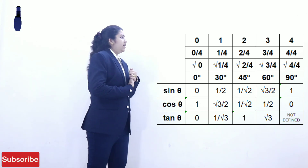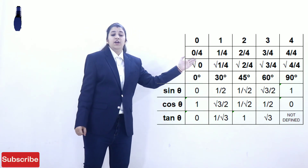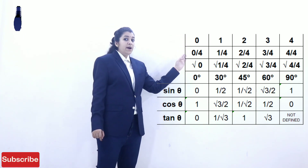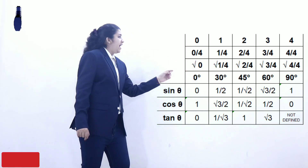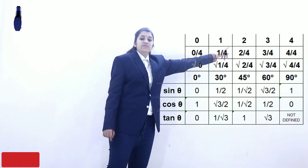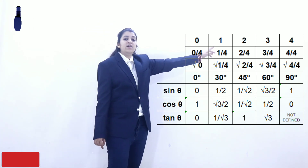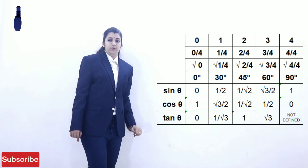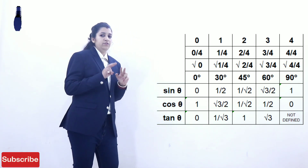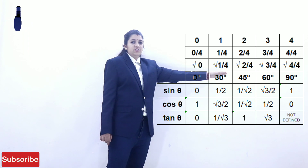Now we move to cos θ. The values we found for sin just need to be reversed. Sin 0°=0, sin 30°=1/2, sin 45°=1/√2, sin 60°=√3/2, sin 90°=1. Reversing: cos 0°=1, cos 30°=√3/2, cos 45°=1/√2 (same as sin 45°), cos 60°=1/2, and cos 90°=0.